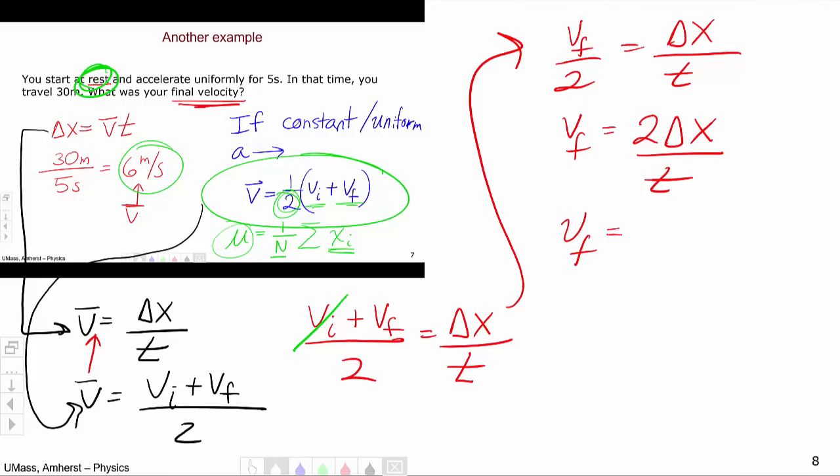Putting in my numbers, notice I solve in letters first, that will be a big thing of this course. One of the goals is to learn how to solve problems symbolically. We'll get a lot more practice with that in class. Two times thirty over five gives me two times six or twelve meters per second for a final velocity, and that's my final answer.